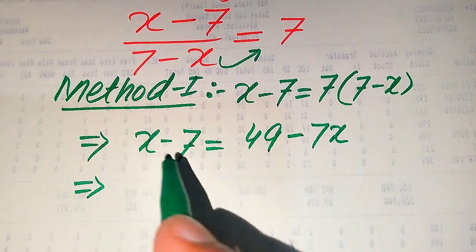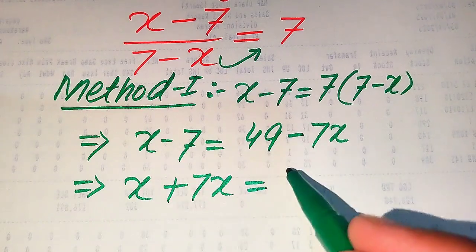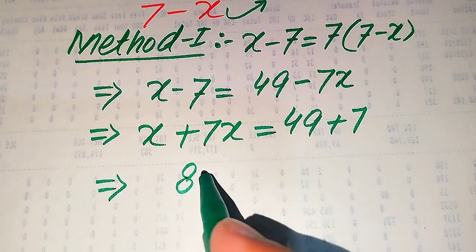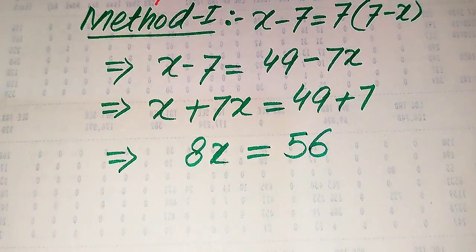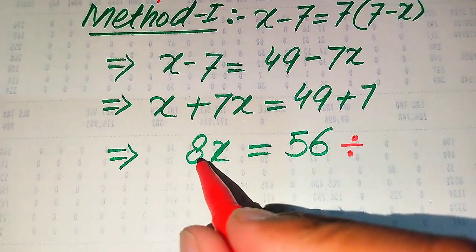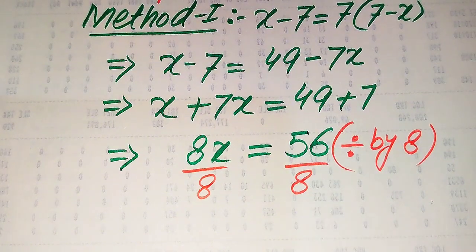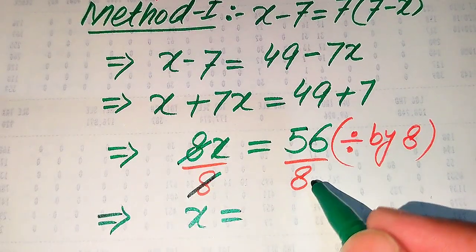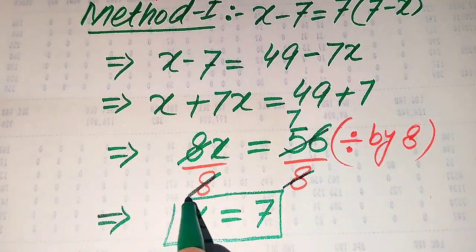Moving minus 7x from the right hand side to the left hand side makes it positive, and moving minus 7 to the right hand side makes it also positive. So we get x plus 7x, which is 8x, equals 49 plus 7, which is 56. To solve for x, we divide both sides by 8. The 8 cancels on the left, giving us x equals 56 divided by 8, which equals 7.